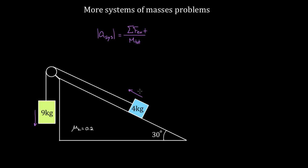What would the acceleration be? The nine kilogram mass is much more massive than the four kilogram mass, so this whole system's gonna accelerate in that direction — let's call that direction positive. Defining the positive direction is a little bit sketchy to some people, but we're just saying the direction of motion this way is what we're calling positive. So forces which go this way are positive, and forces which go the other way are negative.